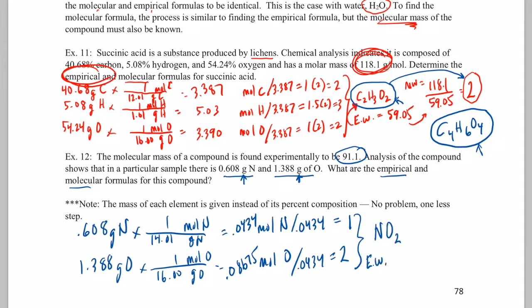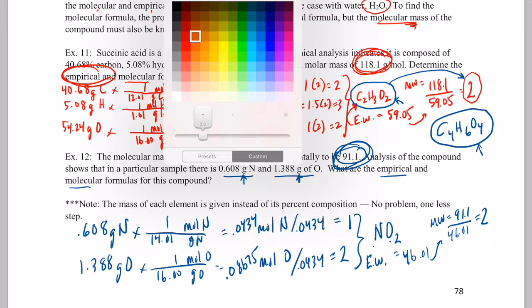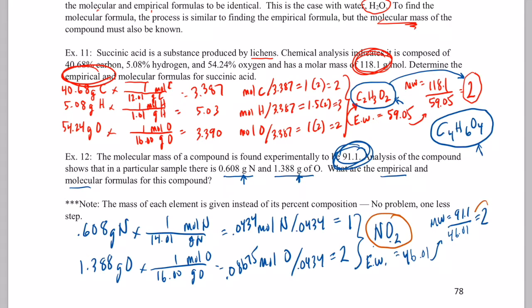To find the empirical formula, we divide by the lowest number of moles — 0.0434 — giving 1 nitrogen and 2 oxygens (0.08675 ÷ 0.0434 ≈ 2). So the empirical formula is NO₂. Now for the empirical weight: nitrogen is 14.01 plus two oxygens at 32.00, giving 46.01 grams per mole. The molecular weight is 91.1 divided by 46.01, which is very close to 2. So the empirical formula NO₂ needs to be doubled, giving the molecular formula N₂O₄ — dinitrogen tetraoxide.